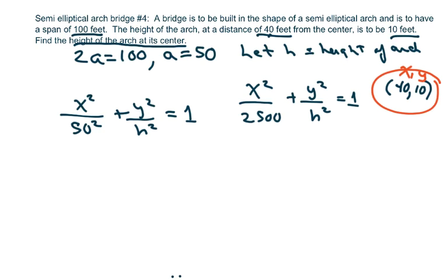So I get 40²/2500 + 10²/h² = 1. I'm solving for h, so moving everything over: 100/h² = 1 - 1600/2500. This equals 9/25.